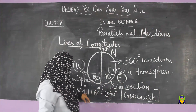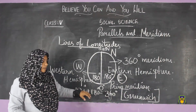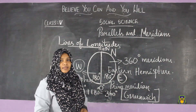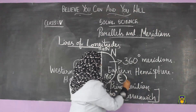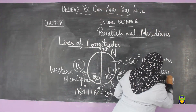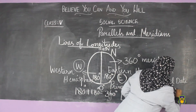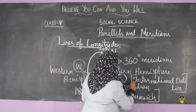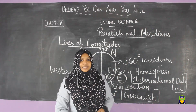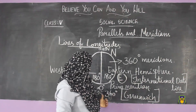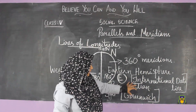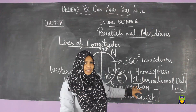The meridians of 180 degrees east and 180 degrees west form the same line, which is known as the international date line. You will study about this in more detail in sixth standard.